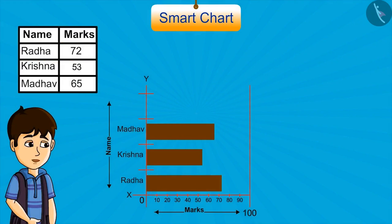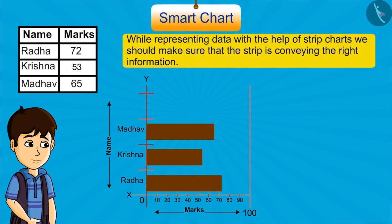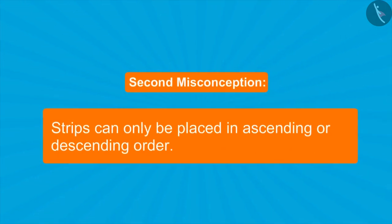Now see, this Smart Chart is perfect because it is showing correct marks scored by students. So kids, while representing data with the help of strip charts, we should make sure that the strip is conveying the right information.